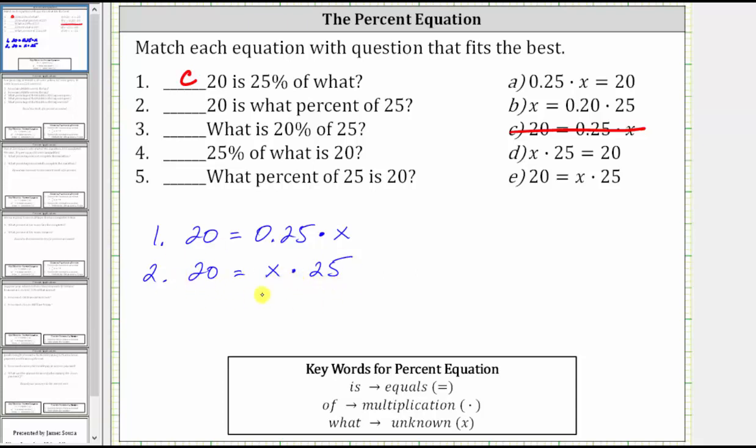Now, when solving this equation, we do have to remember that we're finding a percent. So when we solve for x, we get a decimal, which we then convert to a percentage. Again, looking at our choices on the right, 20 equals x times 25 is choice E. Let's record the answer and move on to number three.